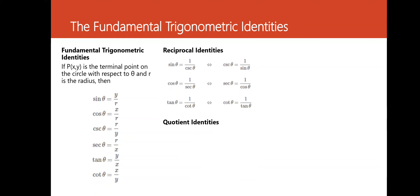Next, we have quotient identities. Tangent θ equals sine θ over cosine θ, and cotangent θ equals cosine θ over sine θ. We call these quotient identities because you are simply dividing two other trigonometric functions.